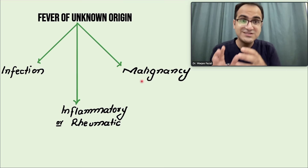Infections are the most common cause — almost 55% of cases of fever of unknown origin, especially in third world countries. In developed countries, inflammatory causes such as rheumatic and autoimmune diseases account for 34% of cases, and malignancies contribute to approximately 35% of cases.